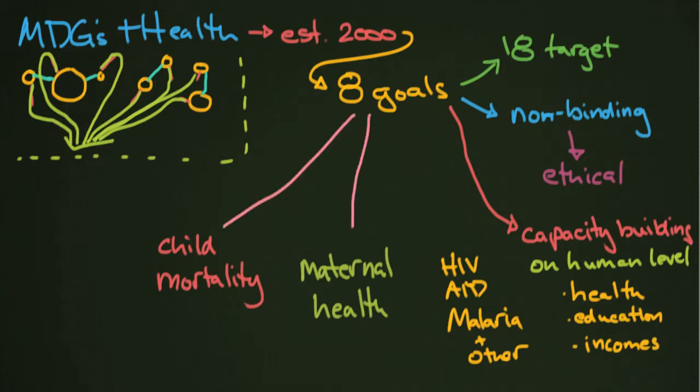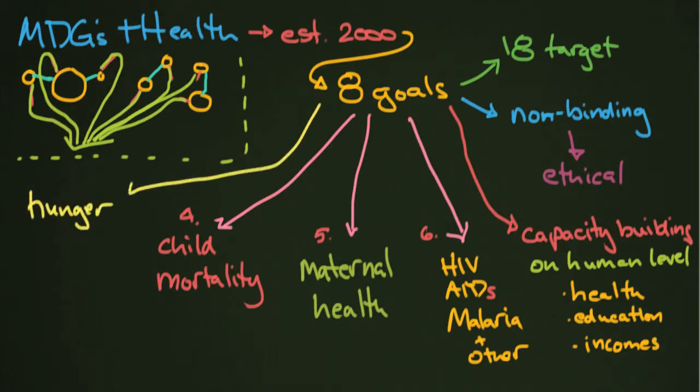Child mortality was goal number four. Maternal health was goal number five. And HIV and AIDS, malaria, all these things were goal number six. Goal number one was about hunger and income. So I'm going to put that as one of our health-related ones because hunger is a very major issue in the developing world.